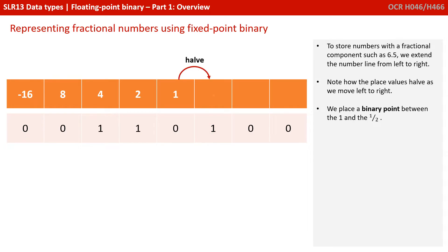To store numbers with a fractional component, such as 6.5, we extend the number line from left to right. Note how the place value is now half as we move from left to right. We place a binary point between the 1 and the half. Using this format, 6.5 would be represented as 0011 0100. So that's a 1 in the 4 and 2 column, 4 plus 2 is 6, plus a 1 in the half column for 6.5.